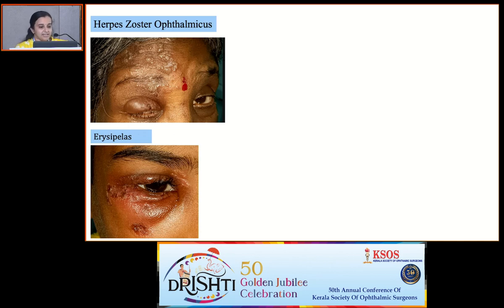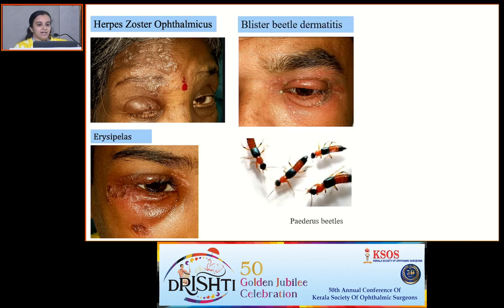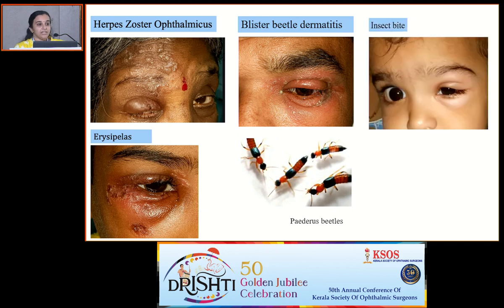Whenever there are painful rashes, think about bacterial infections like erysipelas. Blister beetle dermatitis is caused by Paedrus beetles, which is characterized by pustular or vesicular lesions on an extremely erythematous skin. And don't forget to ask about a history of insect bite, especially in the case of children.